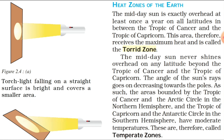The mid-day sun never shines overhead on any latitude beyond the Tropic of Cancer and the Tropic of Capricorn. The angle of the sun's rays goes on decreasing towards the poles. The areas bounded by the Tropic of Cancer and the Arctic Circle in the Northern Hemisphere, and the Tropic of Capricorn and the Antarctic Circle in the Southern Hemisphere, have a moderate temperature and are therefore called the Temperate Zone.